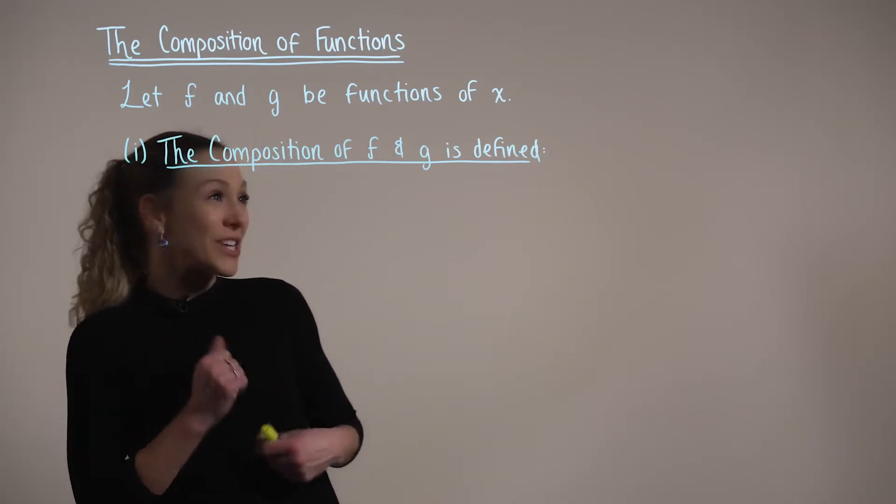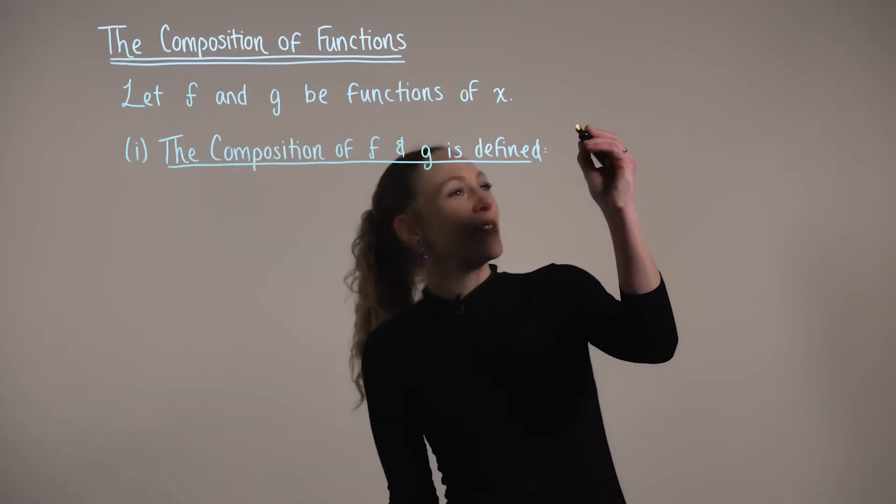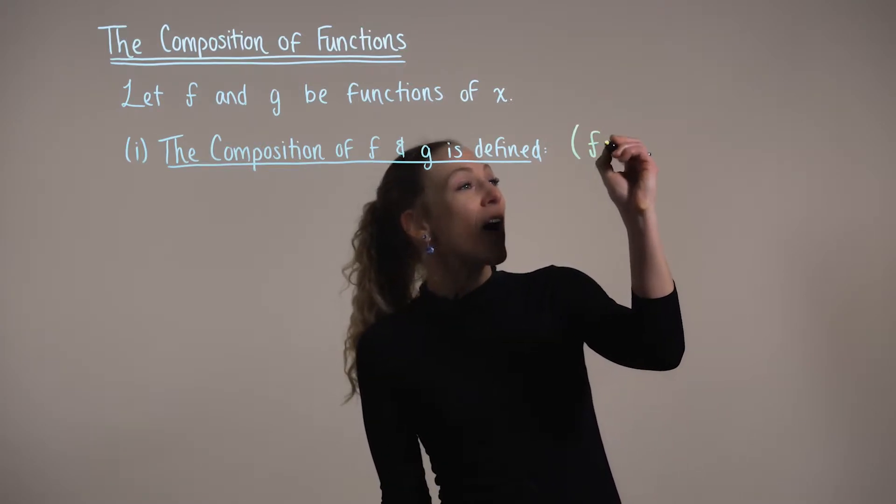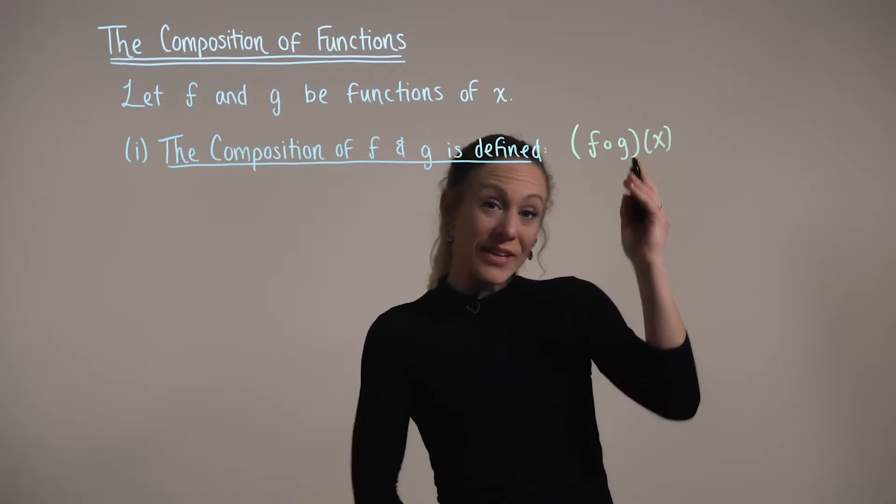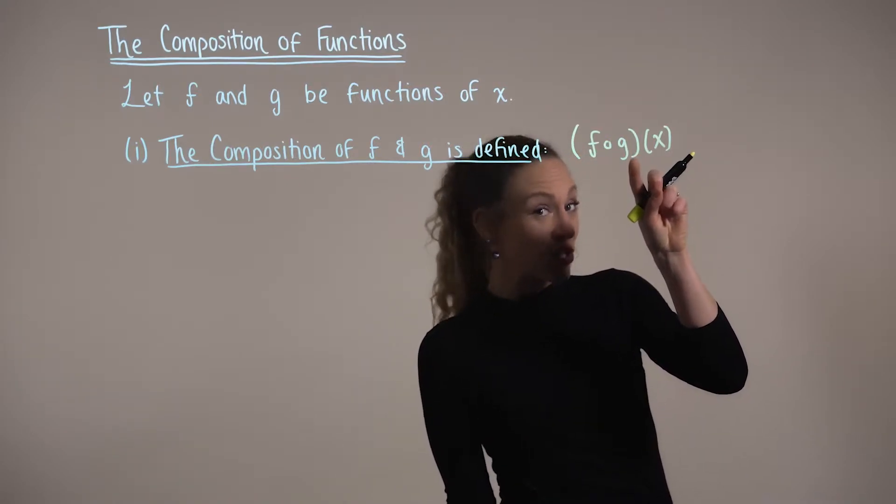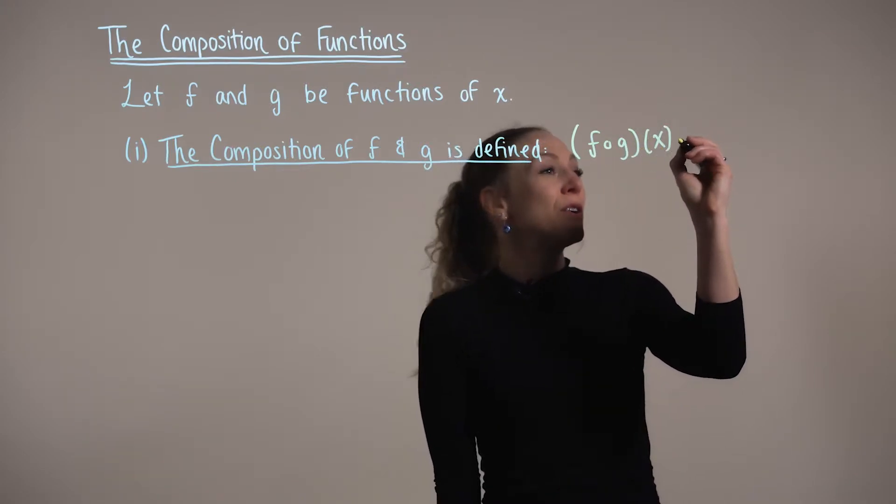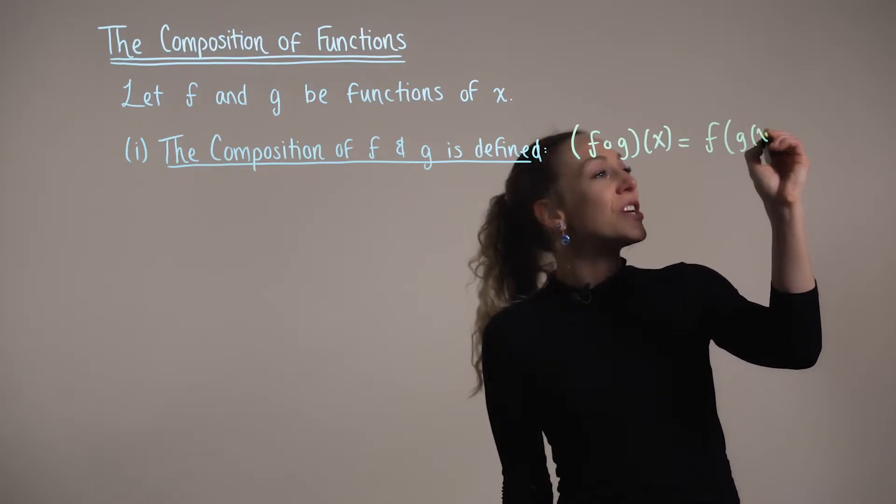Now, the composition of f and g is defined as follows. So we define this as f of g of x. And this open circle here is representing the substitution of the inside function g into the outer function f. So we can rewrite this equivalently as f of g of x.